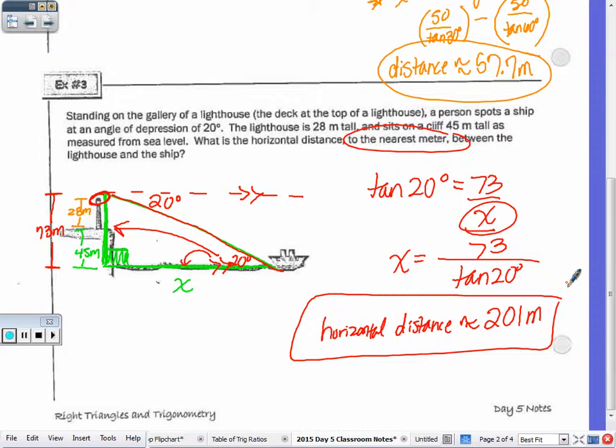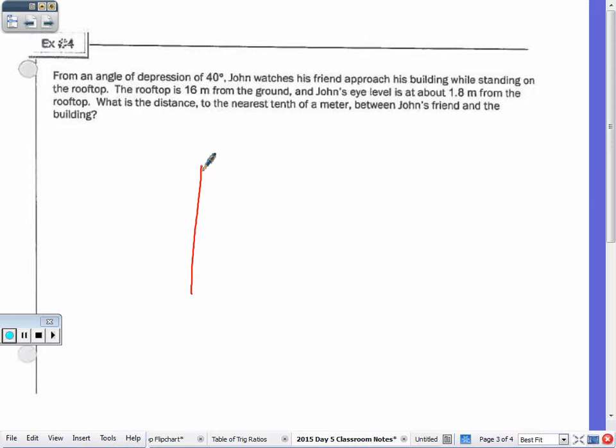You have a building. John is watching his friend approach the building while he's standing on the rooftop. So this question here, here's my building. John watching his friend and he's standing on the rooftop. So there's John. It says that John's eye level. Now the rooftop is 16 meters from the ground. So from here down is 16 meters. And then it says, and John's eye level is about 1.8 meters from the rooftop. So this is 1.8 meters.